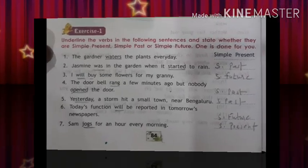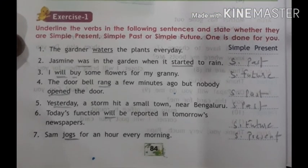Now we solve the first exercise: underline the verbs in the following sentences and state whether they are simple present, simple past, or simple future. One is done for you. Look at the first example: 'The gardener waters the plants every day.' It is simple present tense. The verb here is 'waters'.